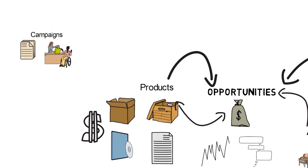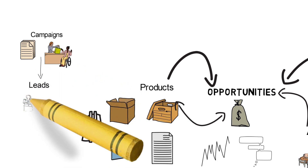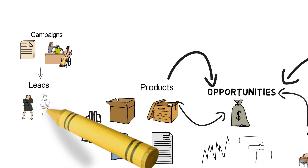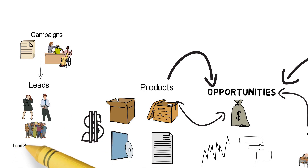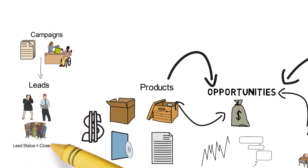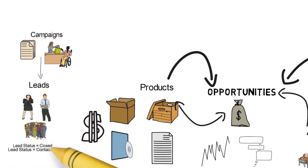Campaigns can be advertising, email, webforms, and more. Campaigns can result in new leads. Leads are people in the earlier stages of the sales cycle. In a lead, three things might happen: we find that the lead is not a prospect or customer, so we can update the lead status to Closed.